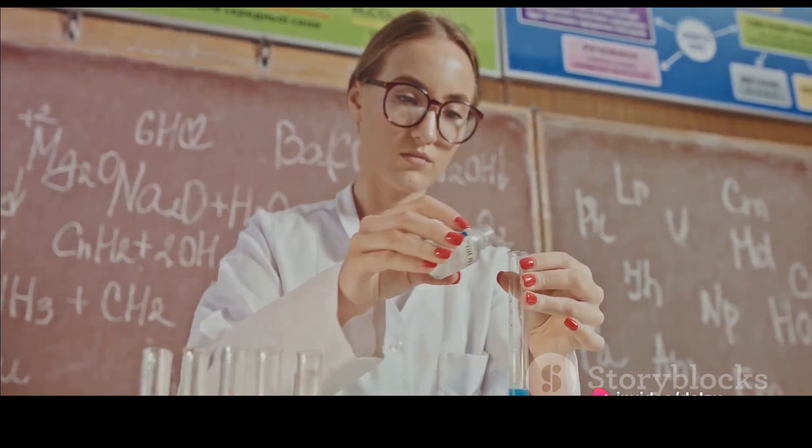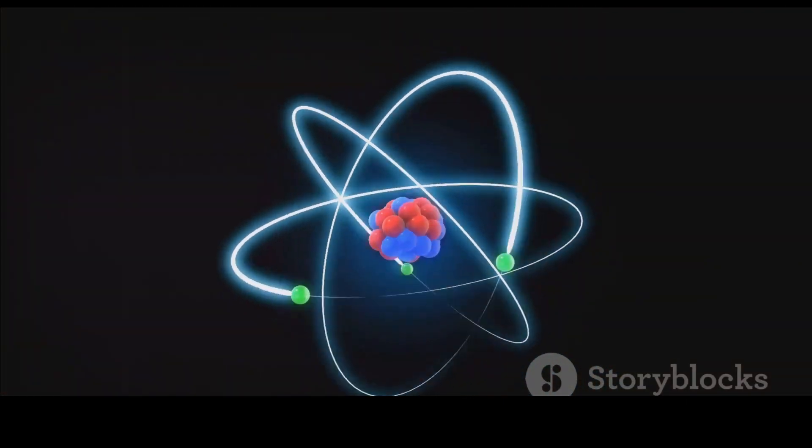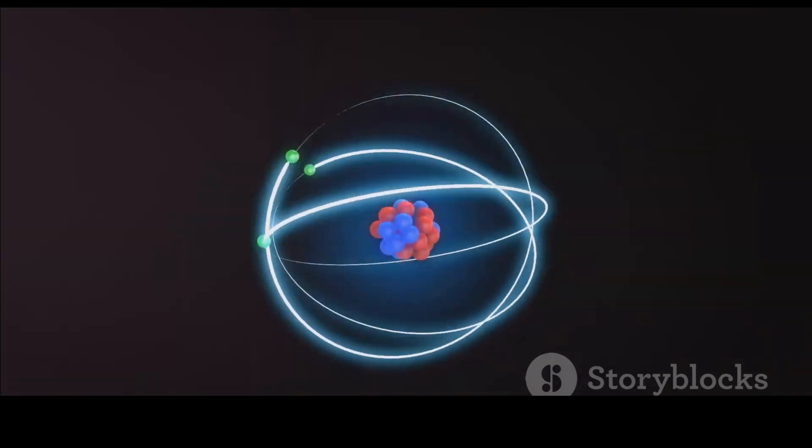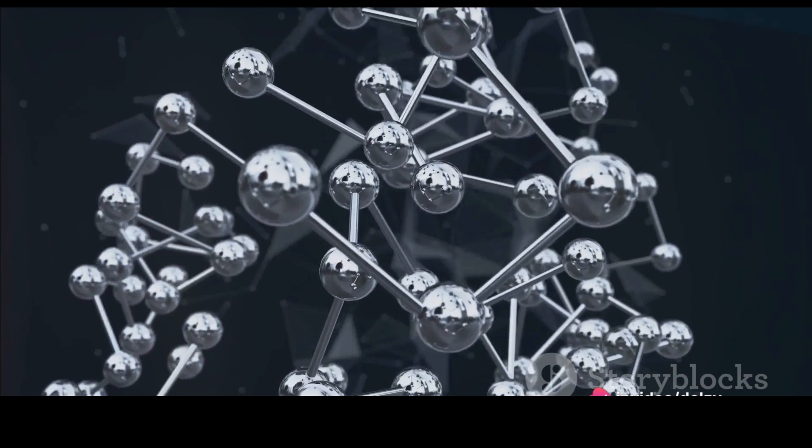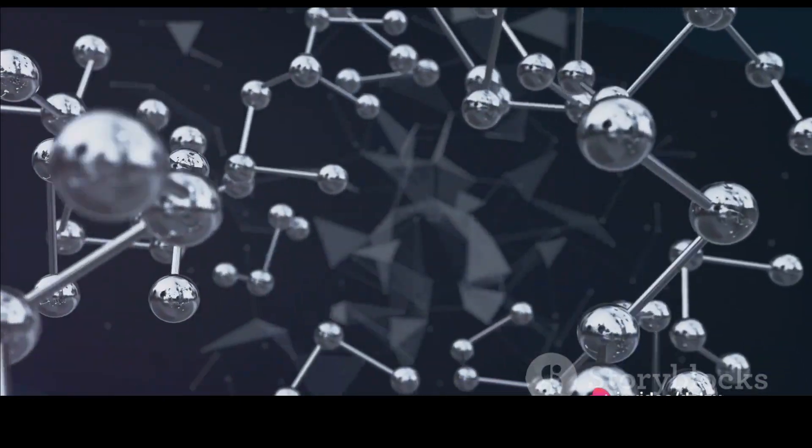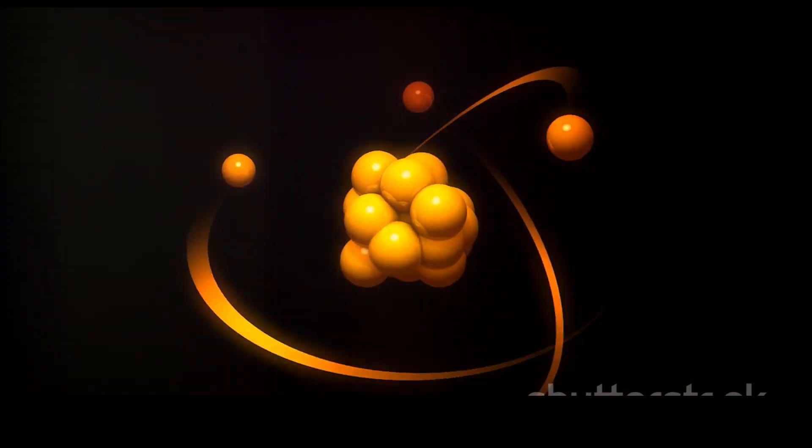The ancient Greeks were the first to propose the idea of atoms. Around 400 BC, a philosopher named Democritus suggested that if you kept cutting a piece of matter into smaller and smaller pieces, you would eventually reach a point where you could not cut any more. He called these uncuttable pieces atomos, which we now know as atoms.